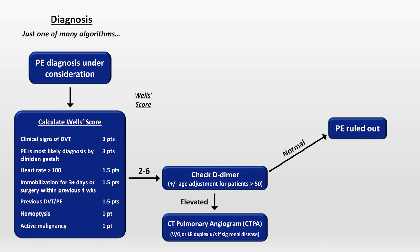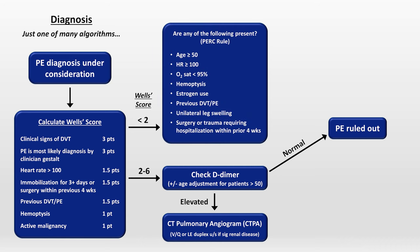If the patient's Wells score is 0 or 1, putting them into the lowest risk category, the next step would be to apply the PERC rule, which asks if any of eight features are present, all of which would increase the risk of PE. If none of the PERC features are present in a patient who also has a low Wells score, a PE has been ruled out without any additional diagnostic tests.